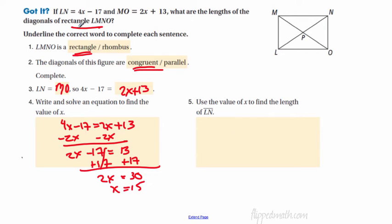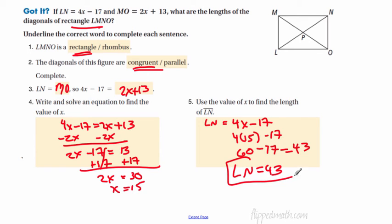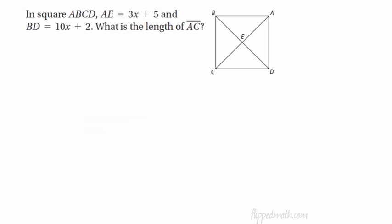Now, remember, the question is: what are the lengths of the diagonals? So we're not done yet. You have to plug that back in. And remember, the diagonals are congruent, so we can pick either one. So let's pick LN. So if LN equals 4x minus 17, we're going to plug that value 15 in, and that will give us 60 minus 17. What is 60 minus 17? That would be 43. Ta-da! So LN equals 43. Done with that problem. How easy is that? That is easy.